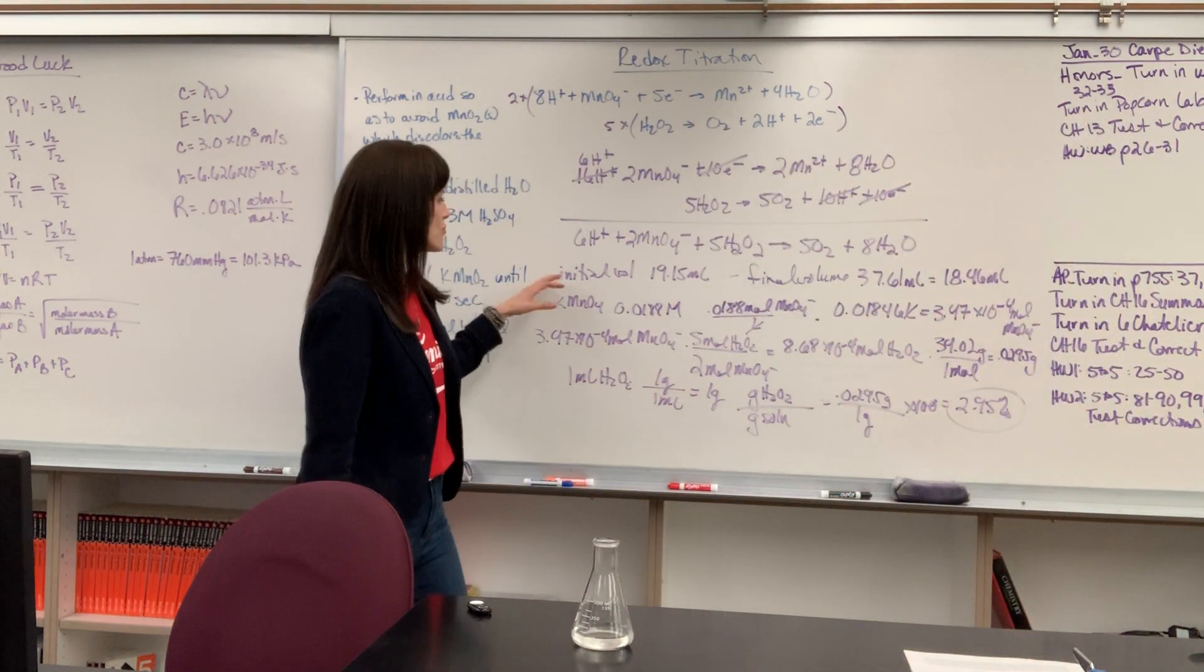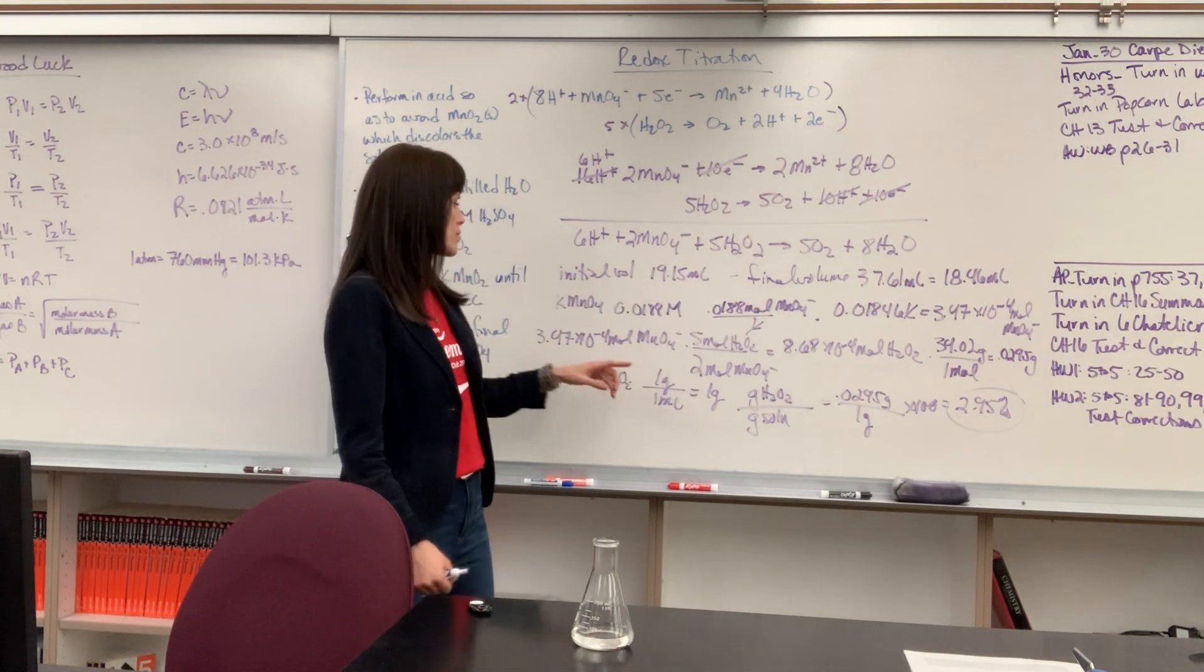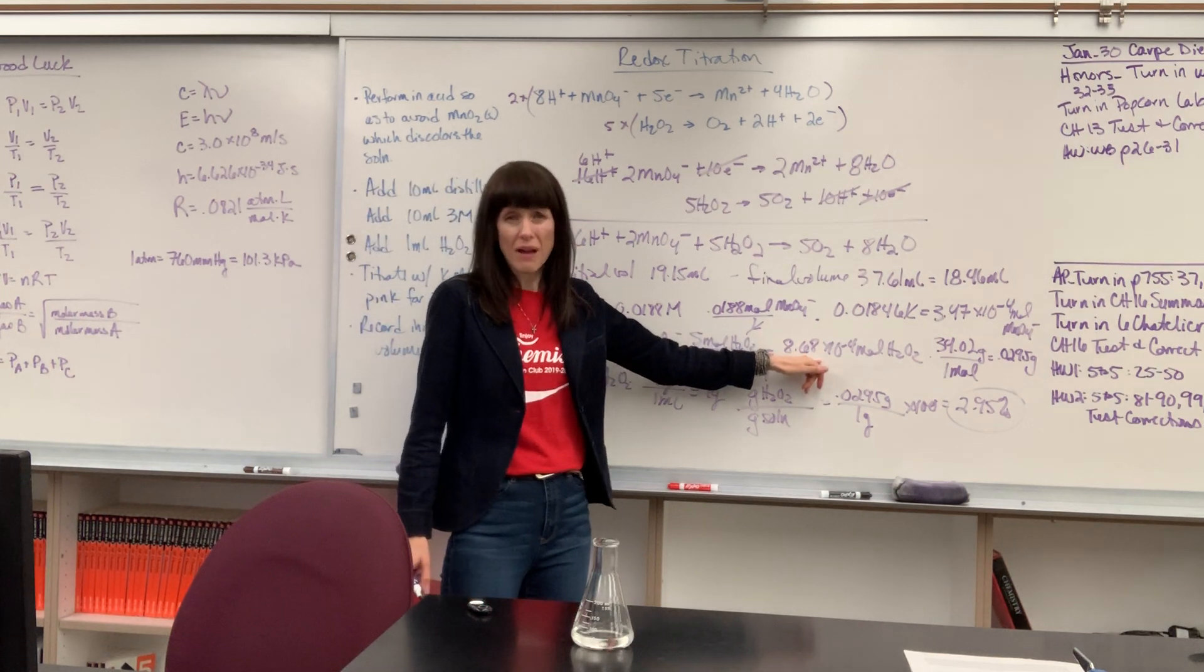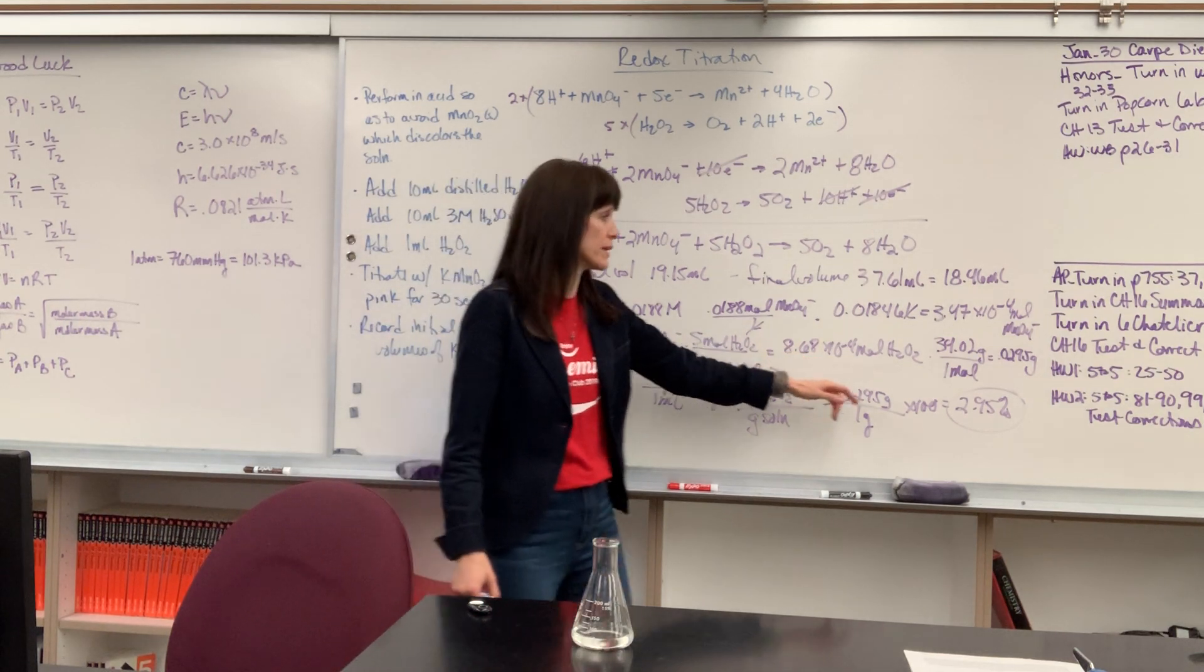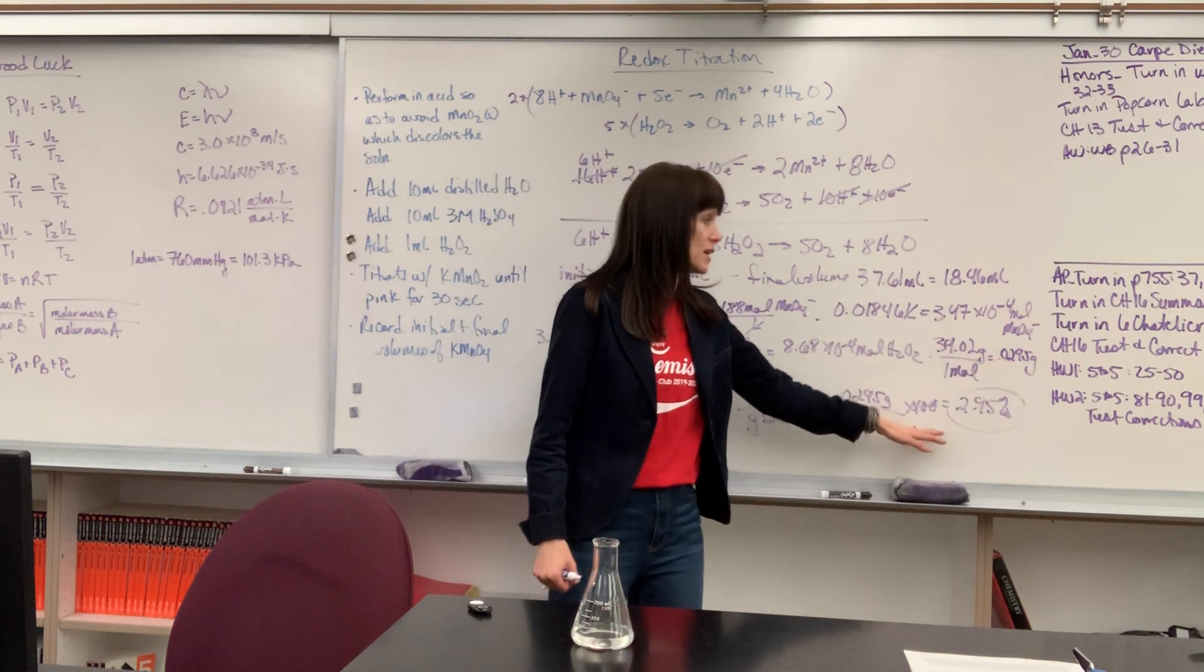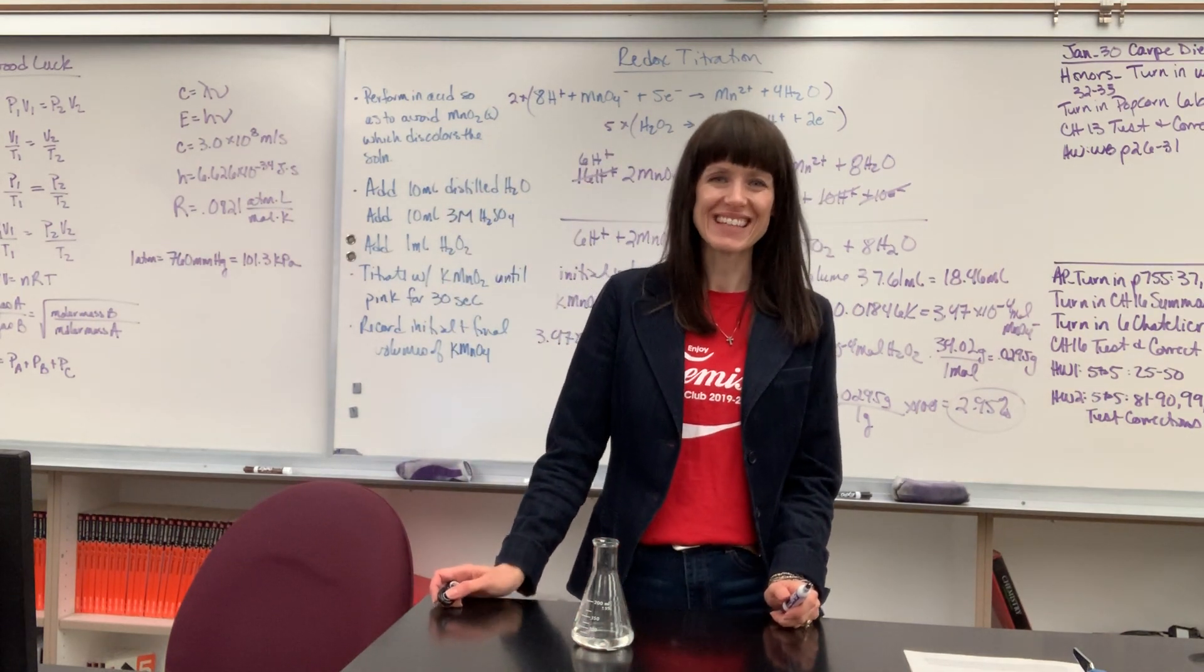And then once you're here, find the moles of the permanganate and convert, using stoichiometry, moles of the permanganate to moles of the hydrogen peroxide. Once you have that, you can find molarity, you can find grams, you can even find percent mass. Good work. So proud of you. Have a great day.